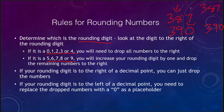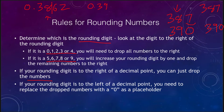Now, if your rounding digit is to the right of a decimal point, you just drop the numbers completely. For example, if we were rounding 0.3862 and wanted to round to the hundredths place, we look at our digit, increase it by one to get 0.39, and we're done. We don't have to add any zeros — in fact, adding zeros would be a bad thing because they would be counted as significant figures. If your rounding digit is to the left of a decimal point, you need to replace the dropped numbers with zeros as placeholders.